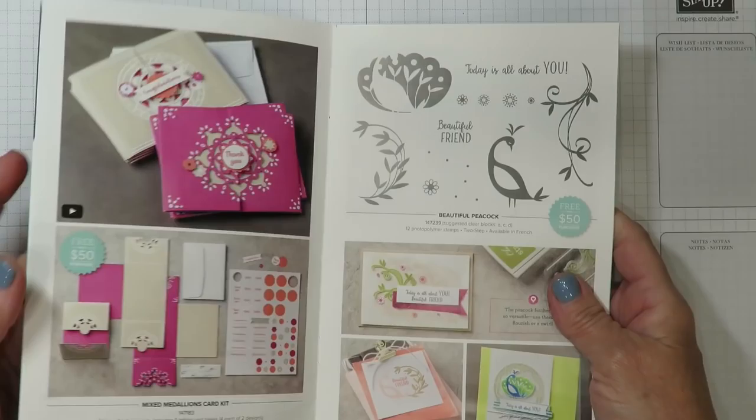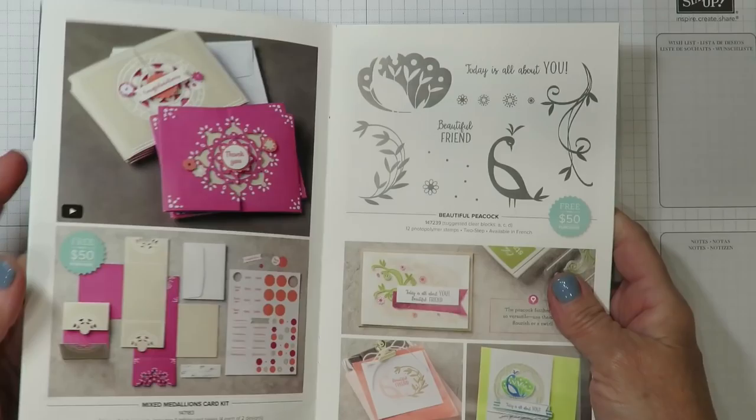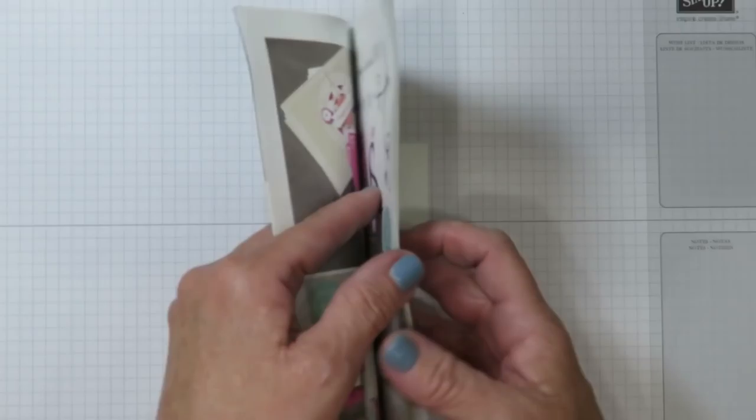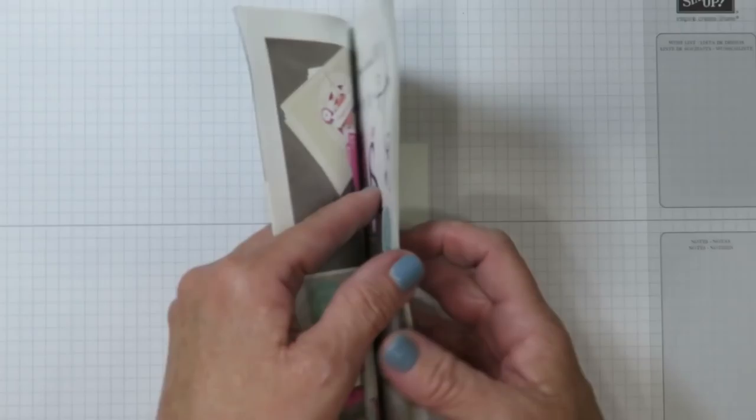I'm going to create that image on a square of Whisper White cardstock. And I'm using the stamp set that's actually free during Stampin' Up's celebration. This is their largest sale of the year and for every $50 product purchase, you can select a free item from the catalog with a $50 label here for absolutely free.